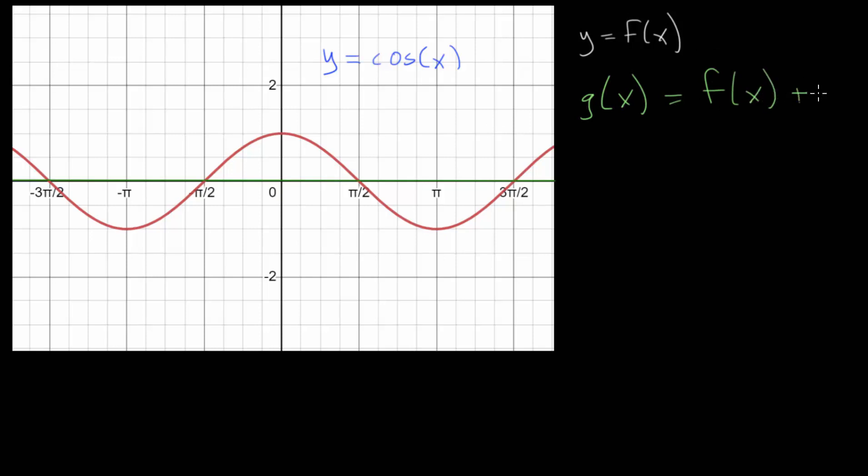and just add on the outside of the function. We're not adding to the independent variable, we are adding essentially to the overall function or the y value of the function. And we can just add some variable amount, let's just call it h. And by adding h on the outside,